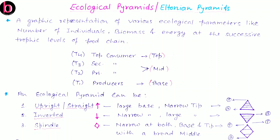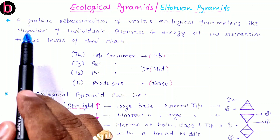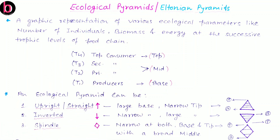Ecological pyramids are simply graphic representations of various ecological parameters like number of individuals, biomass, and energy at successive trophic levels of a food chain. So the three key parameters we focus on are: number of individuals, biomass, and total energy at successive trophic levels in the food chain. When framing ecological pyramids, we focus mainly on two types of trophic levels — producers and consumers — where consumers are further categorized as primary consumer, secondary consumer, and so on.